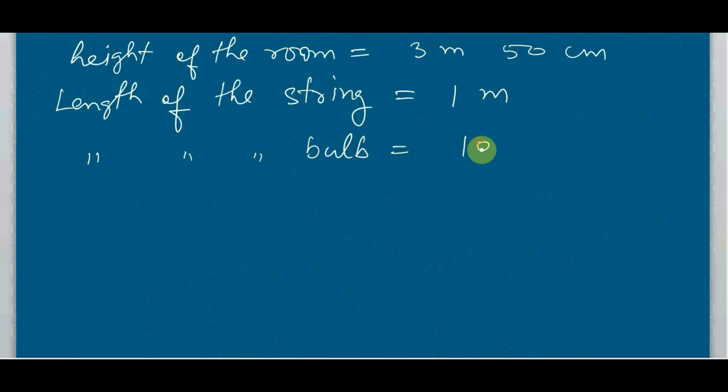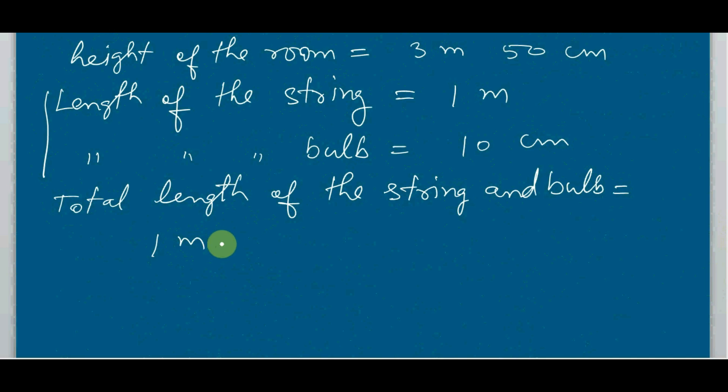So what do we have? Then you will need to determine the total length of the string and bulb. You'll write here that total length equal to what? You will add this one: 1 meter and 0 centimeters, plus 10 centimeters. So your answer will be 1 meter 10 centimeters.